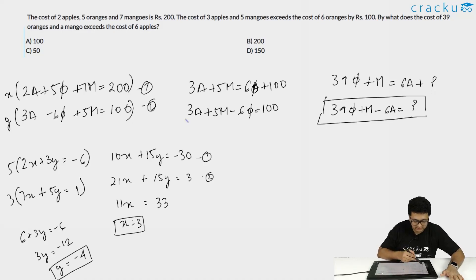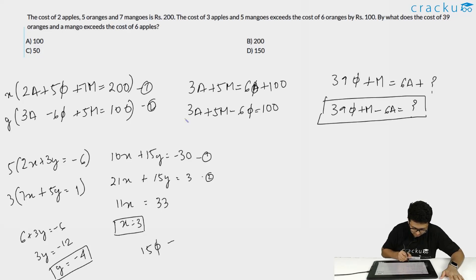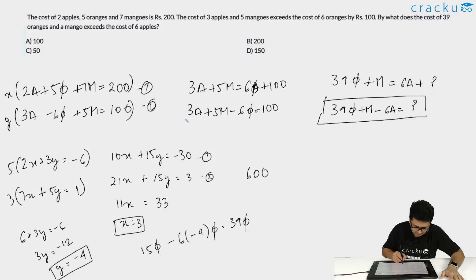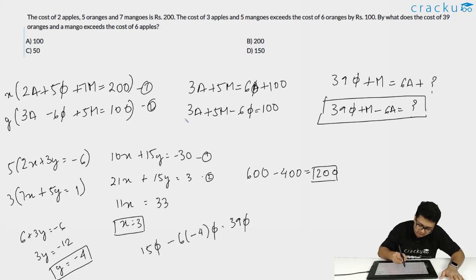Now that we know X = 3 and Y = −4, we can verify the orange coefficient: 5X − 6Y = 15 + 24 = 39, confirming the required expression. The answer is 200X + 100Y = 3×200 + (−4)×100 = 600 − 400 = 200. So the answer is 200 rupees.